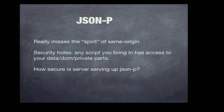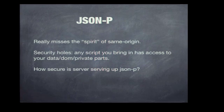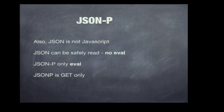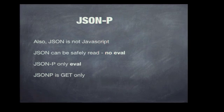JSONP kind of misses the spirit of same origin security. It has security holes — any script you bring in this way is being eval'd, so it can have wider access to the internal workings of your JavaScript app in the browser, maybe more than you'd like. And that depends on how secure the server serving up the JSONP is — is it vulnerable to man-in-the-middle attacks? JSON is not JavaScript; JSON can be safely read without using an eval. But JSONP, as far as I know, only works by eval-ing whatever it gets back. And you can only do GET, which is a bit of a bummer in a RESTful API world.